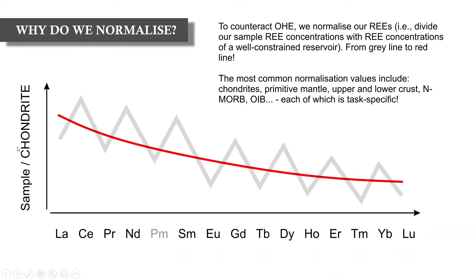We can normalize to a number of different reservoirs, the most common being chondrites or primitive mantle, but also upper crust, lower crust, E-MORBs, or even samples within your own dataset. As you can imagine, normalization can be quite subjective and task specific — you'd have to normalize based on the job you were doing.